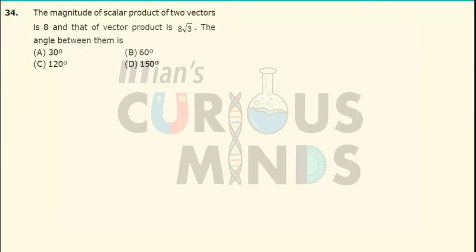The magnitude of scalar product of two vectors is 8 and the vector product of two vectors is 8 root 3. The angle between them is? If I consider that there are two vectors, a vector and b vector over here.